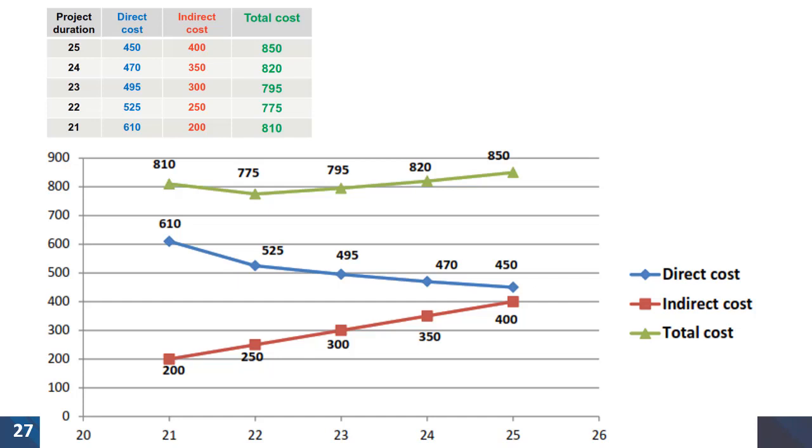We can plot and now the total cost is increased to $810. This is when we stop crashing and reducing activity duration. The graph shows that the optimum duration is 22 days with the associated total cost of $775.